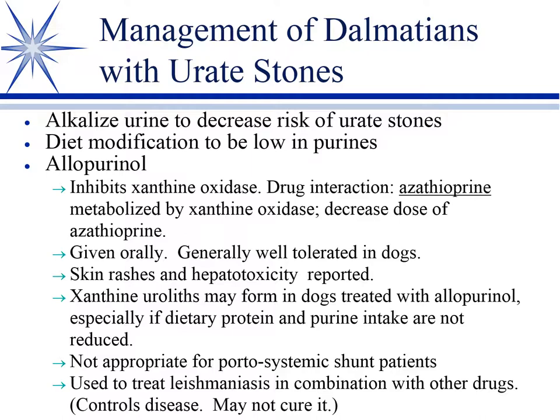Something Dr. Mackin alluded to: the immunosuppressive azathioprine is metabolized by xanthine oxidase. So allopurinol will cause azathioprine toxicity if you don't reduce the dose. If you're ever treating a Dalmatian with allopurinol and it needs immunosuppressive therapy, remember this important drug interaction. Otherwise, allopurinol is given orally and is pretty well tolerated. You occasionally see some skin rashes and liver problems have been reported, as have xanthine uroliths — those are relatively rare, but do occur. Since you're putting more xanthine into the urine, there is a small possibility that this will be a problem.